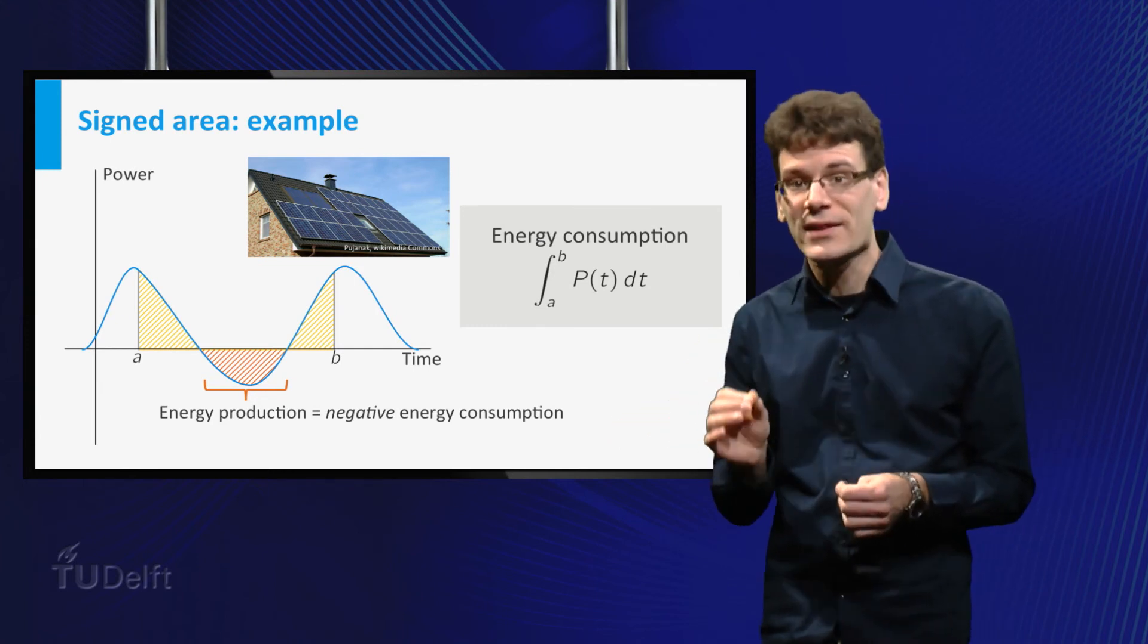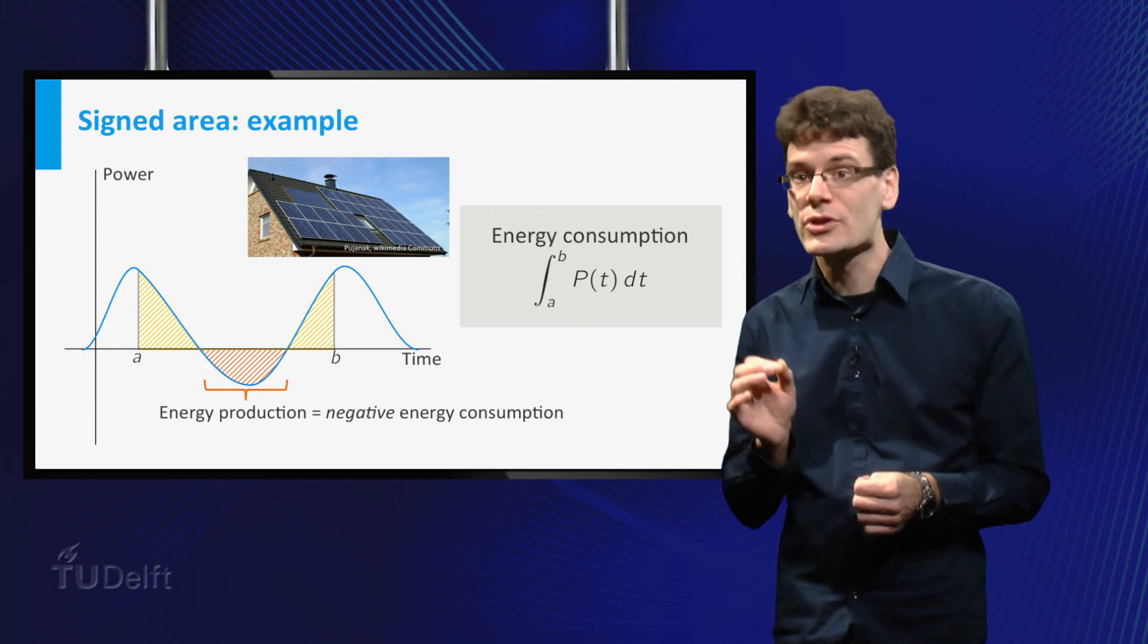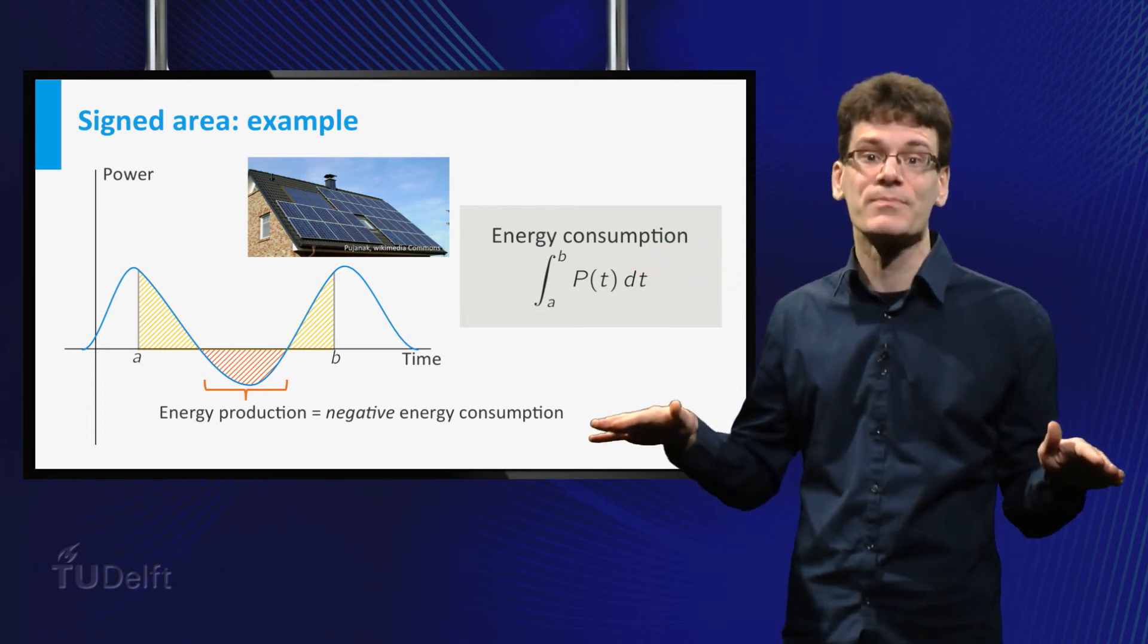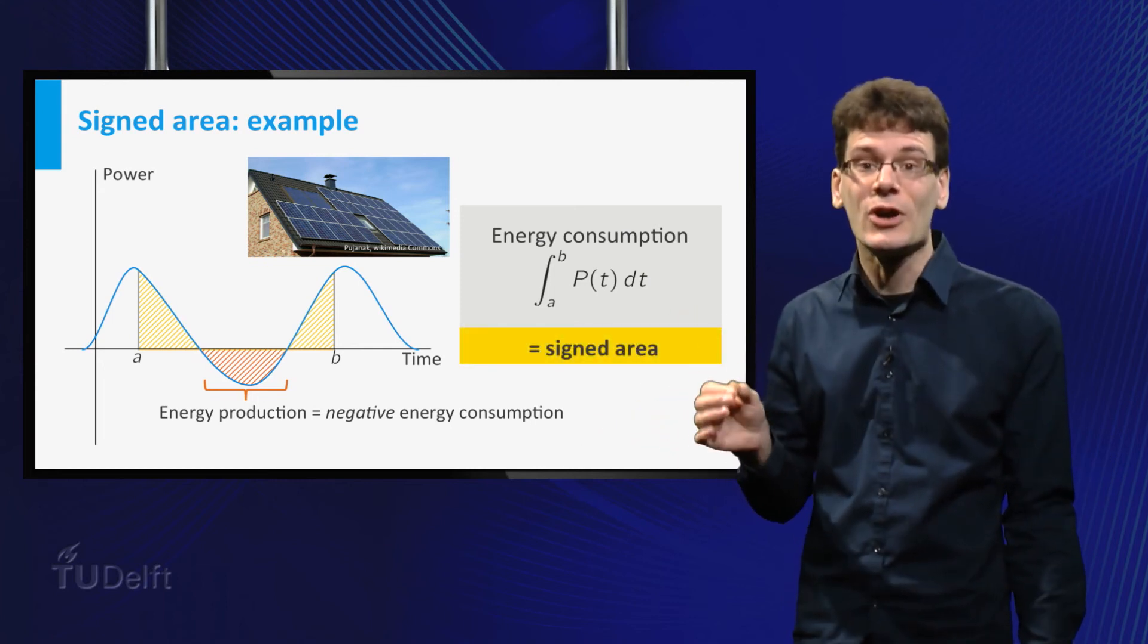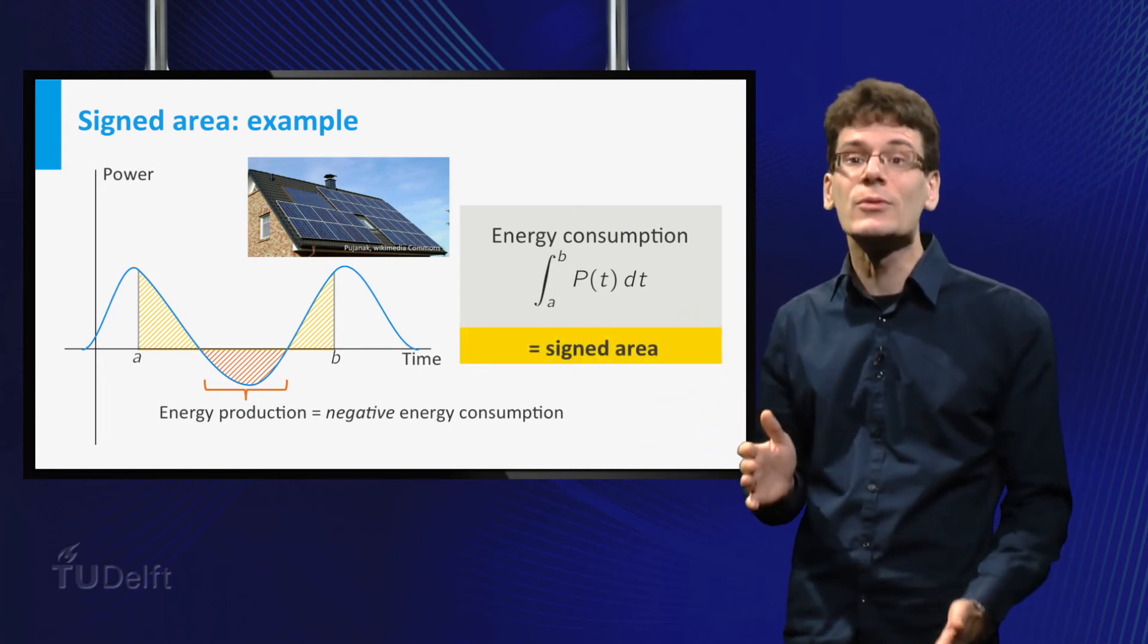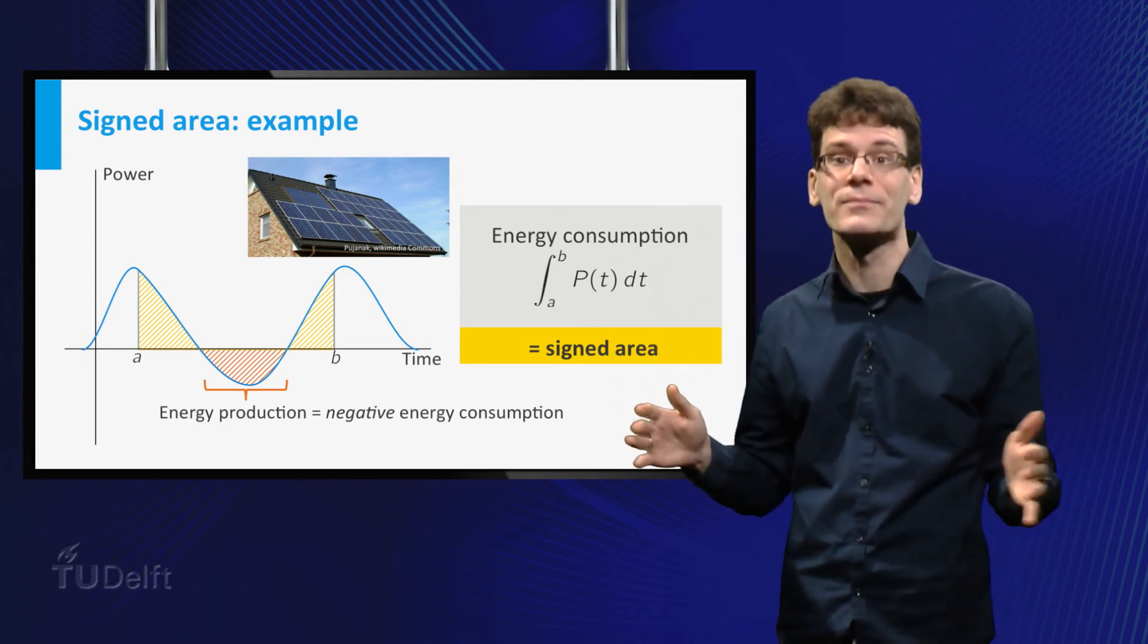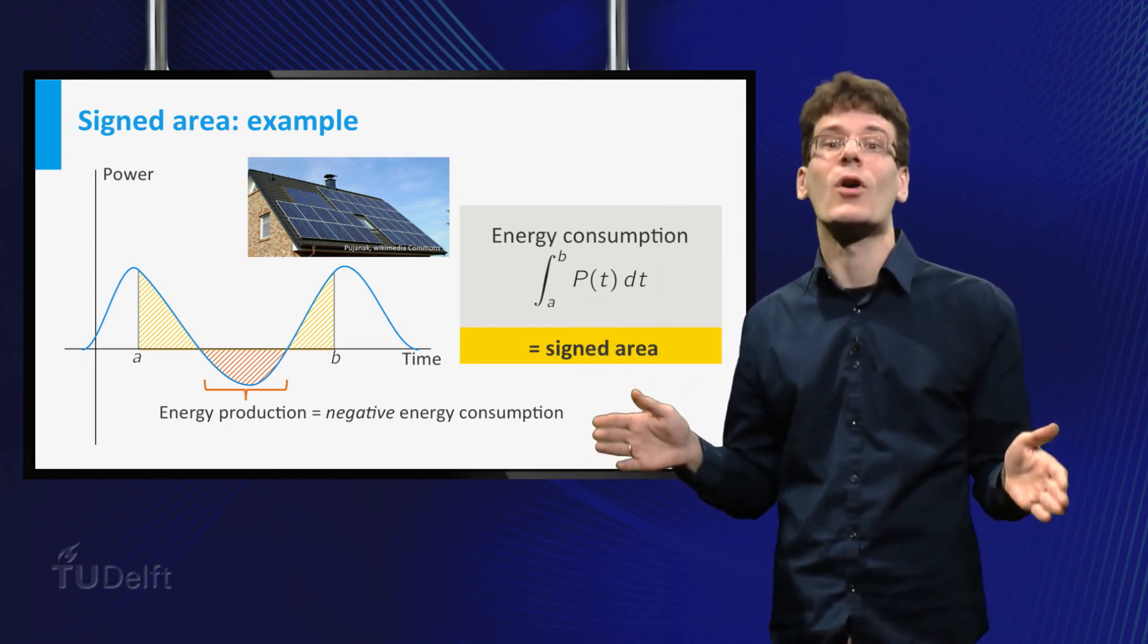And to determine your effective power consumption, you have to subtract this from the area between the positive part of the graph and the horizontal axis. That is, your total energy consumption is equal to the signed area of the region enclosed by the graph and the interval from a to b on the horizontal axis.